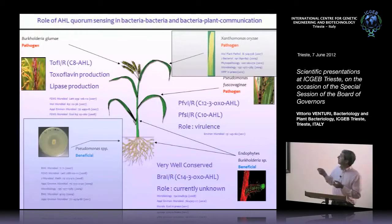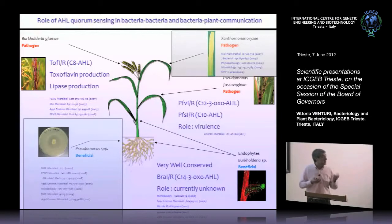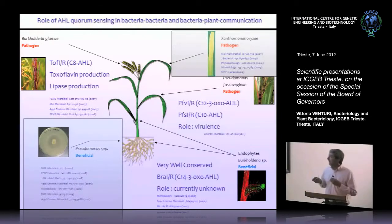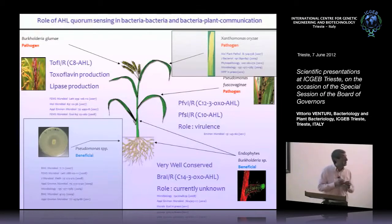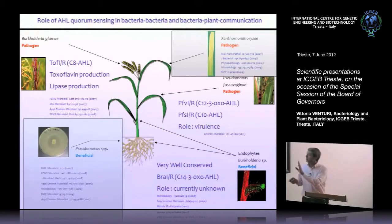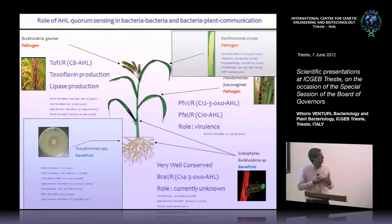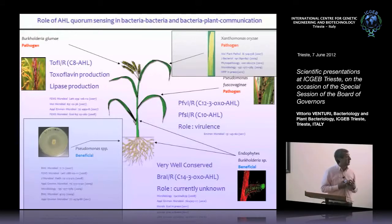In particular, I want to highlight today Xanthomonas oryzae, a very important pathogen — the second most important pathogen of rice after a fungus — and the beneficial Pseudomonas in the rice rhizosphere. What we discovered, to our big surprise, is that these opposing organisms — a good guy and a bad guy — share a new way of communicating with the plant that we discovered.